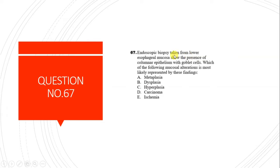Question 67: An endoscopic biopsy from the lower esophageal mucosa shows columnar epithelium with goblet cells. The mucosal alteration represented is A - metaplasia. Metaplasia is the conversion of one cell type or epithelium to another. The lower esophagus normally has cuboidal epithelium, but after exposure to acids it forms columnar epithelium - hence metaplasia.